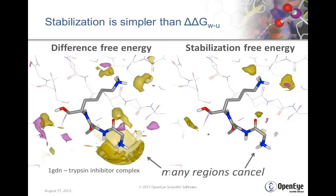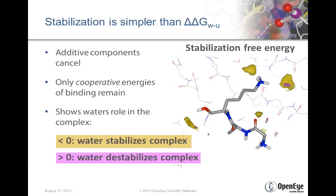Stabilization results in a much simpler and cleaner perspective than the difference free energy. Because many regions cancel, you're left with a much more focused view. What cancels is the additive components, and what we're left with is just cooperative energies of binding in the solvent. In the figure shown here, the two large yellow blobs near the amine are regions where water is actually helping binding. In purple, water would be destabilizing binding.